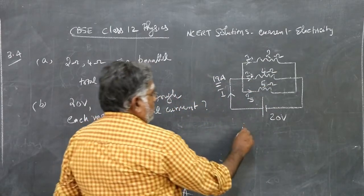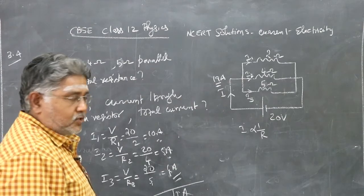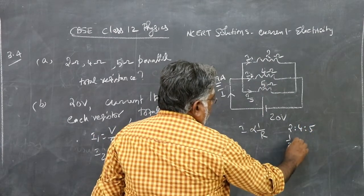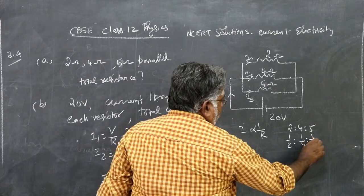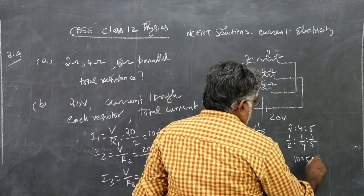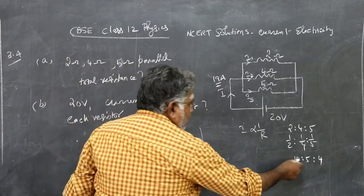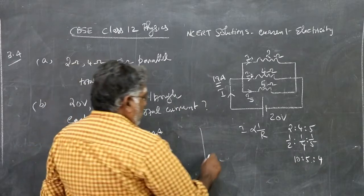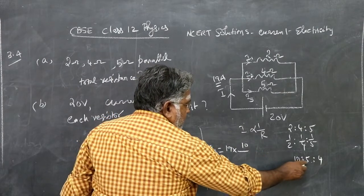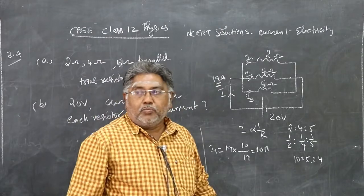Note that when voltage is constant in a parallel combination, current is inversely proportional to resistance. The total current divides in the reciprocal ratio of resistances. The direct ratio is 2:4:5, so the reciprocal ratio is 1/2 : 1/4 : 1/5, which multiplied by 20 gives 10:5:4. So 19 ampere is divided in the ratio 10:5:4, and I1 = 19 × 10/19 = 10 ampere.